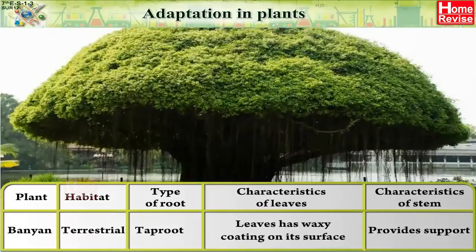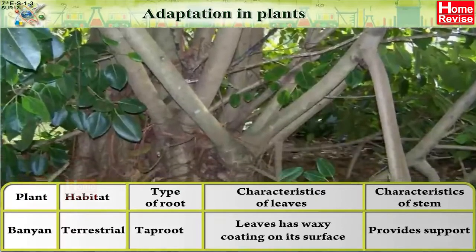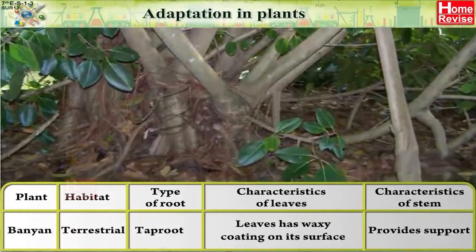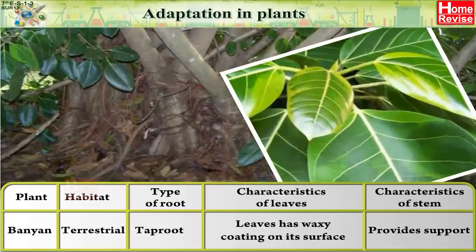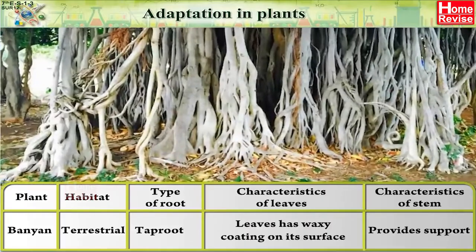Banyan: the habitat of banyan is terrestrial, root is taproot, leaves have a waxy coating on their surface, and the stem provides support.